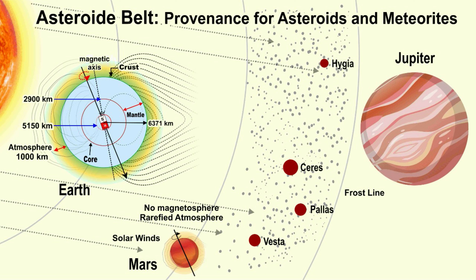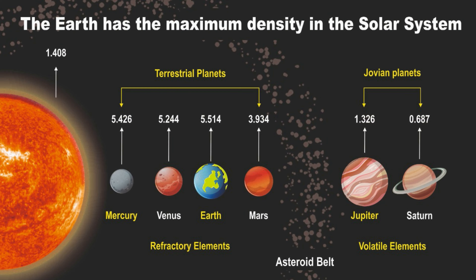Why this comparison with Mars? It is because Mars happens to be the nearest terrestrial planet to Vesta. Also, because the bulk density of Vesta, 3.42 grams per cc, though lower, is somewhat comparable to that of Mars, 3.93 grams per cc. And since Mars has the lowest density amongst all solid planets.